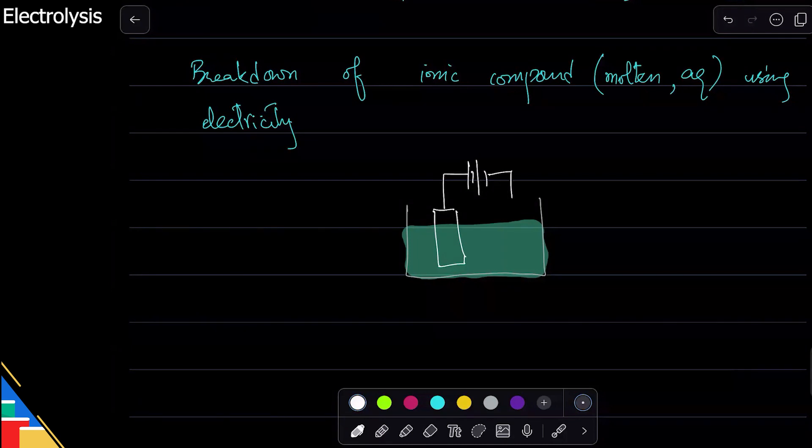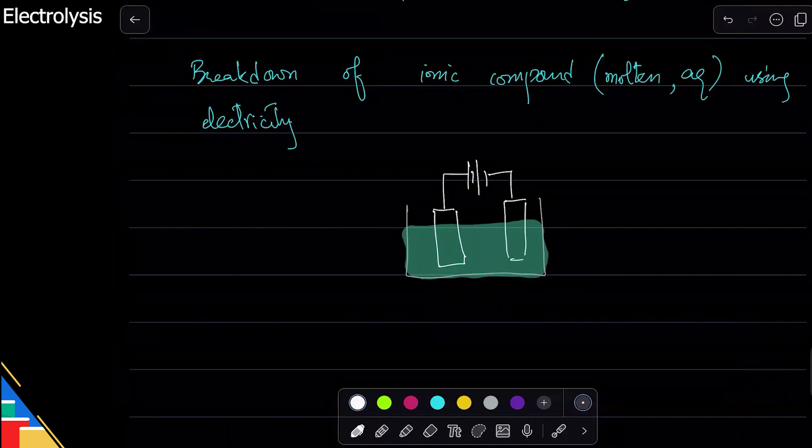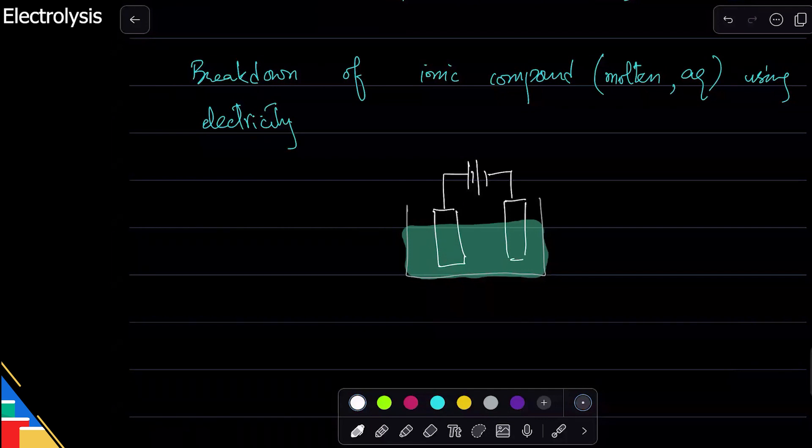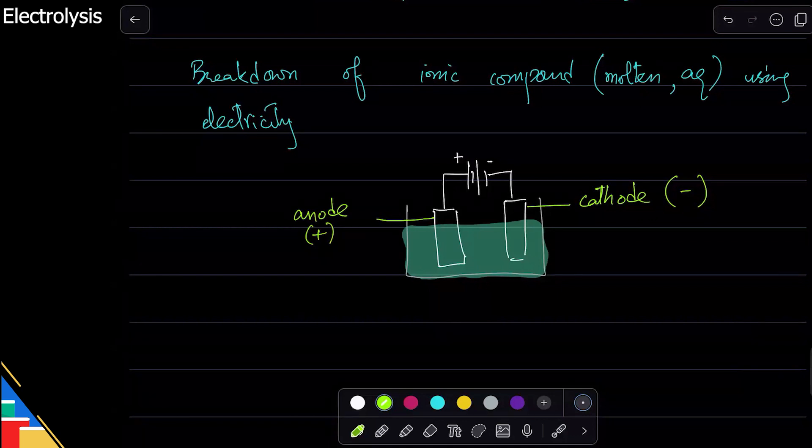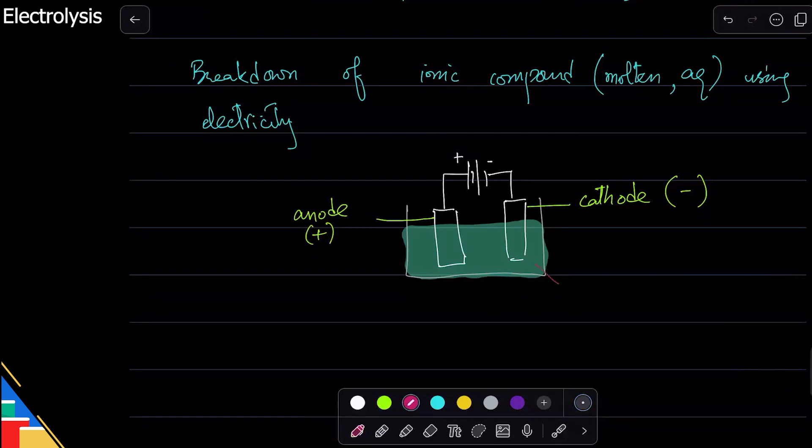This electric rod is called an electrode. Now, for a battery, this side is positive, this side is negative. So that makes this one a negative electrode, which is called cathode. Why? Because it attracts cations. Negative attracts positive ions, so that's why this is cathode. And this one is anode because it is positive—it attracts anions, negative ions. So those are the ions you have here: you have cations here which are positive, and you have anions here which are negative.